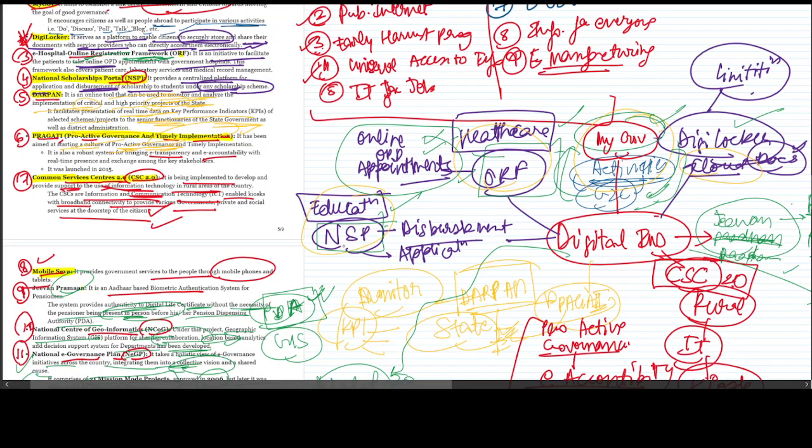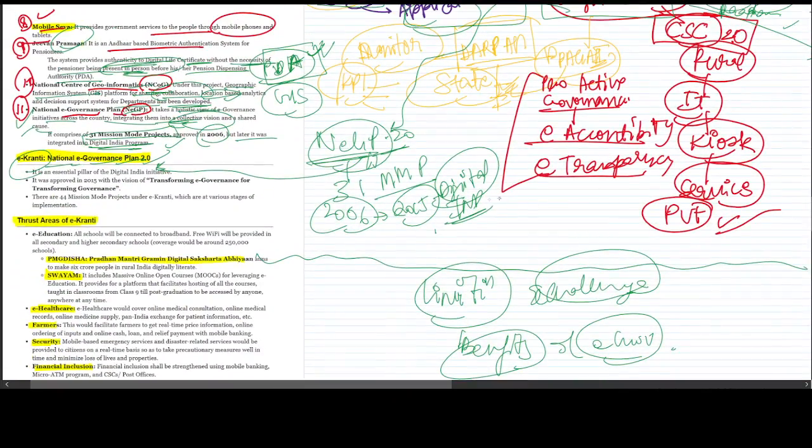Then we studied NSP in the education sector, that is National Scholarships Portal for disbursement and application online for any government scholarships. This was all under Digital India, launched in 2015 with NEGP National E-Governance Plan 2.0, with 31 Mission Mode Projects. In 2006 it was the first time but not so successful. In 2015 it came again with Digital India.